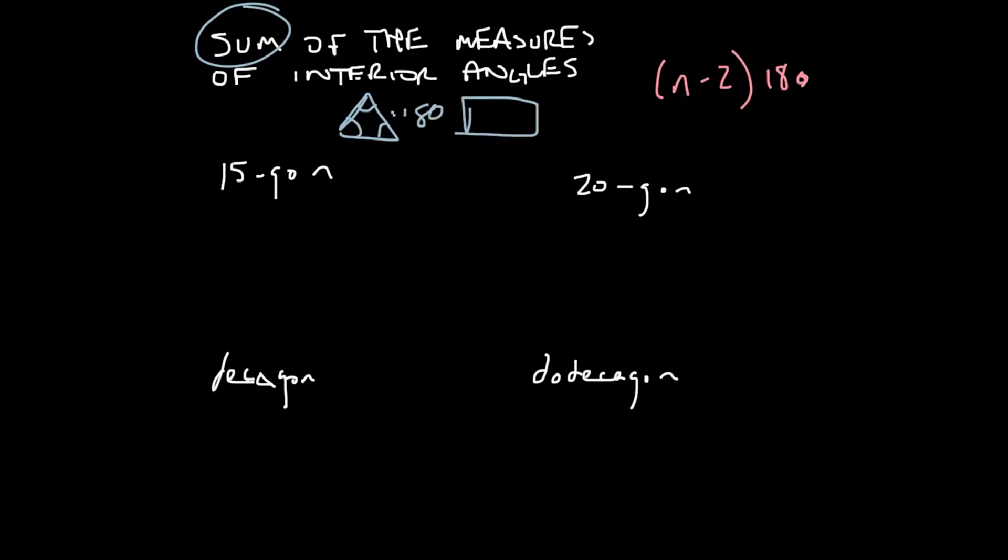If you have a quadrilateral, you know that these four angles are going to add up to 1, 2, 3, 4, 360 degrees. I don't know why I had to count. Okay, and so on and so forth. So, what you're doing is you're finding the amount that the interior angles, that means the angles inside of a polygon, and what they add up to equal.